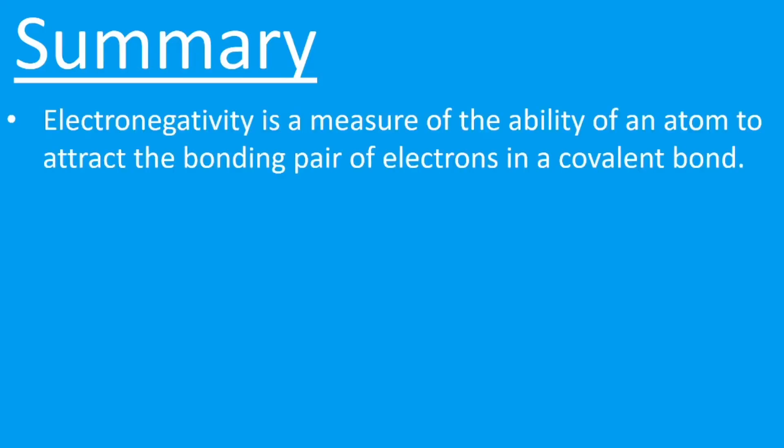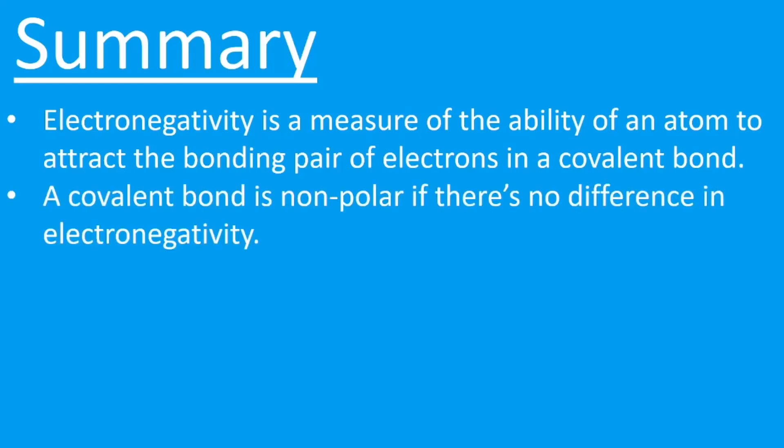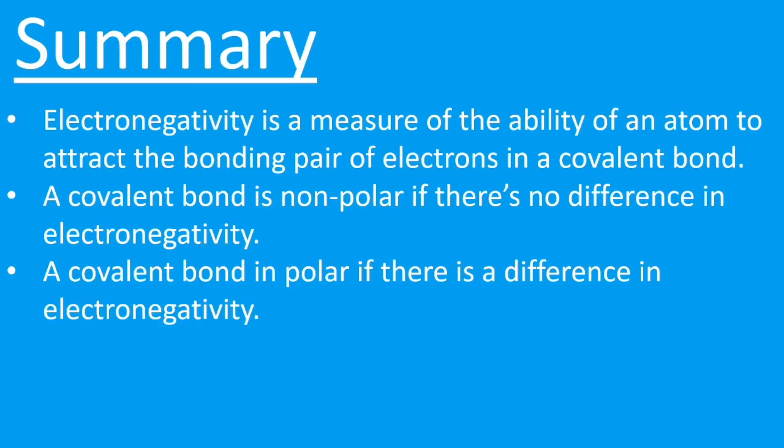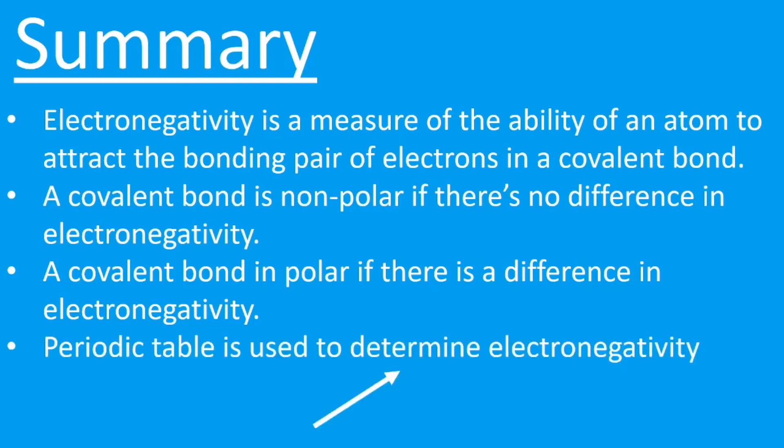To summarize then, we need to know about this term electronegativity being a measure of the ability of the atom to attract the bonding pair of electrons in a covalent bond. The covalent bond is said to be non-polar if there's no difference in electronegativity, and the bond is said to be polar if there is a difference in electronegativity.